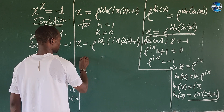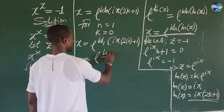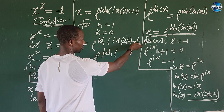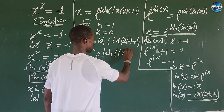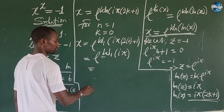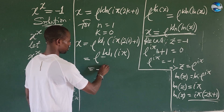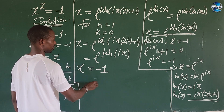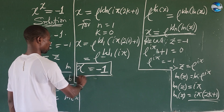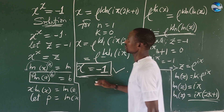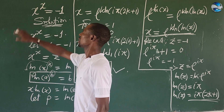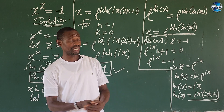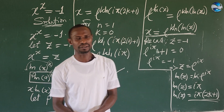If we take n equal to one, then k equal to zero, substituting gives us e to the power of W of 1 times i·pi times (2 times 0 plus 1). That simplifies to e to the power of W of i·pi. Putting this into a calculator gives us the special solution x equals minus one. We can verify: minus one to the power of minus one equals minus one. That is the unique solution to this challenge.